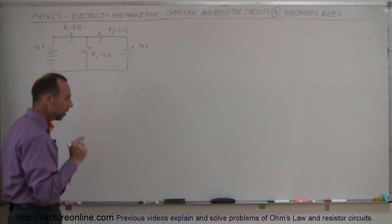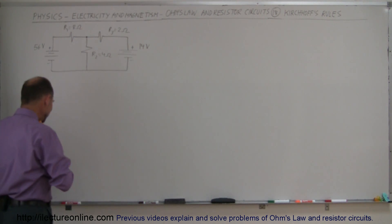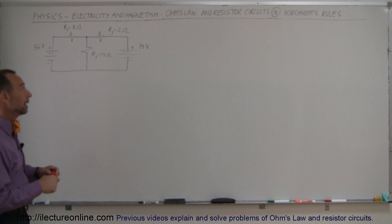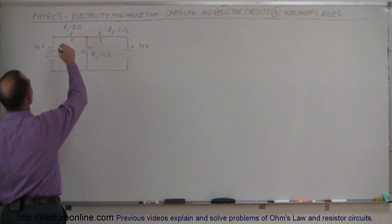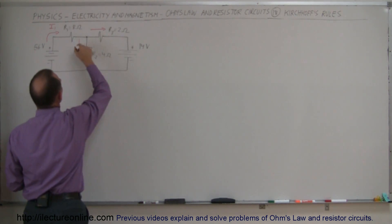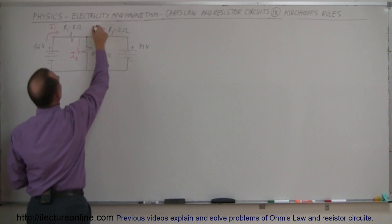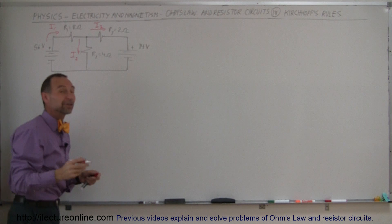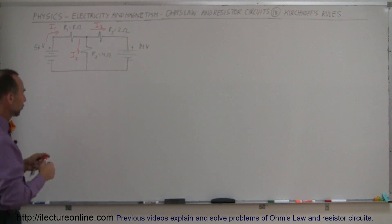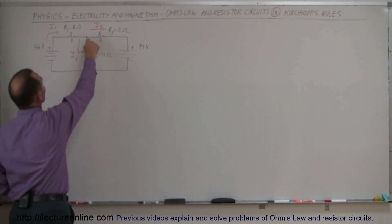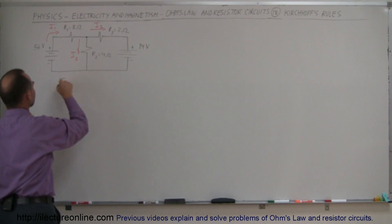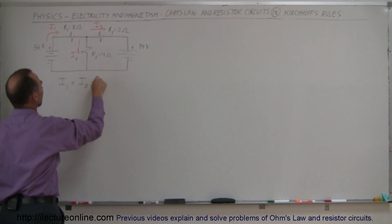Let's get started. The first thing you want to do is indicate which direction you think the current is going to flow. You could be wrong, and that's okay — you'll just get a negative answer. It does look like the current will flow in this direction, so let's call that I1. The current then splits into two branches: let's call those I2 and I3. Since we have a junction here, I1 must equal the sum of the two branch currents, so our first equation is I1 = I2 + I3.